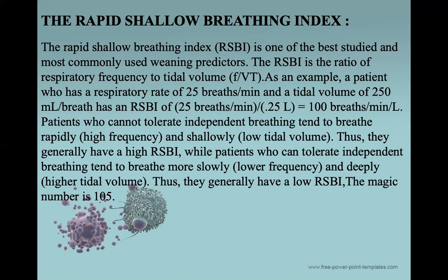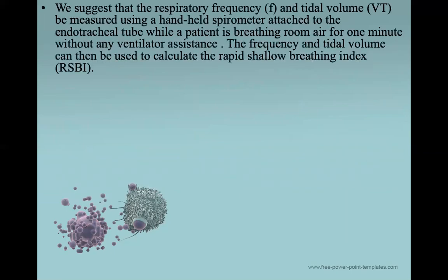To calculate the tidal volume and frequency while the patient is attached to mechanical ventilation, we have several methods. We suggest measuring respiratory frequency and tidal volume using a hand-held spirometer attached to the endotracheal tube while the patient breathes room air for one minute without any ventilatory assistance — meaning we remove the ventilator circuit, attach the spirometer, and let the patient breathe for one minute. The spirometer counts the tidal volume, we count the frequency, and then we calculate the RSBI. But this is not the only method.